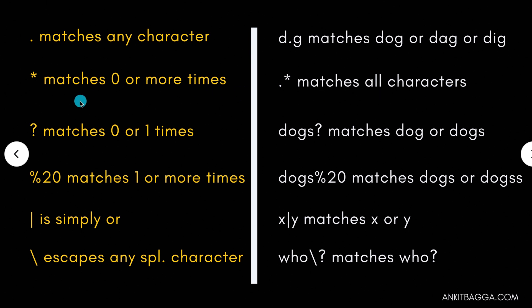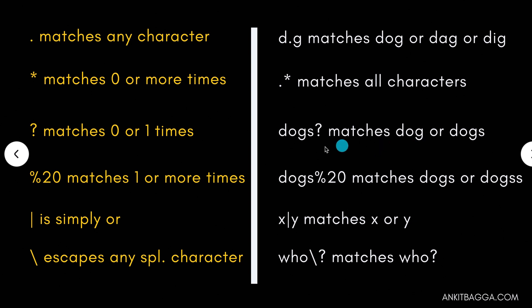Moving on to the third one — the question mark. Question mark ideally matches zero to one times. So dogs with a question mark on the S matches both dog without S and dogs with S. Here S is optional.